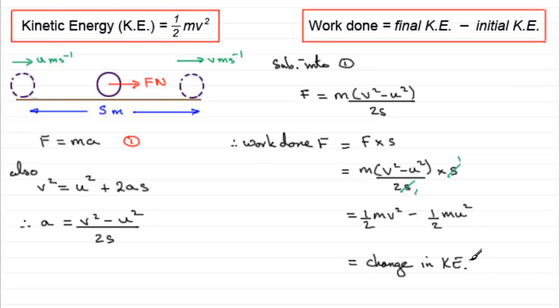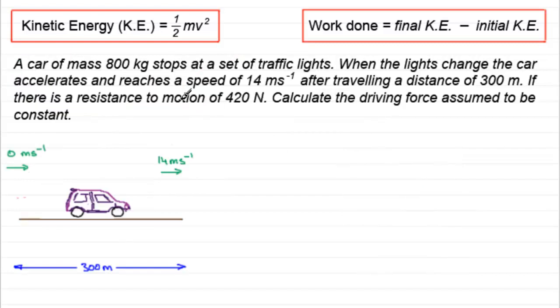Now I've got a problem here that is fairly typical of the kind of thing that you could get. A car of mass 800 kilograms stops at a set of traffic lights. When the lights change, the car accelerates and reaches a speed of 14 meters per second after travelling a distance of 300 meters.